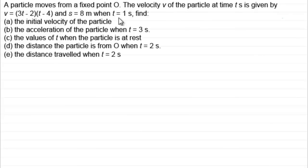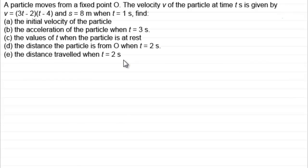And s equals 8 metres when t equals 1 second. We've got to find: the initial velocity of the particle, the acceleration of the particle when t equals 3 seconds, the values of t when the particle is at rest, the distance the particle is from O when t is 2 seconds, and the distance travelled when t is 2 seconds. If you'd like to have a go at that, it would be really good.